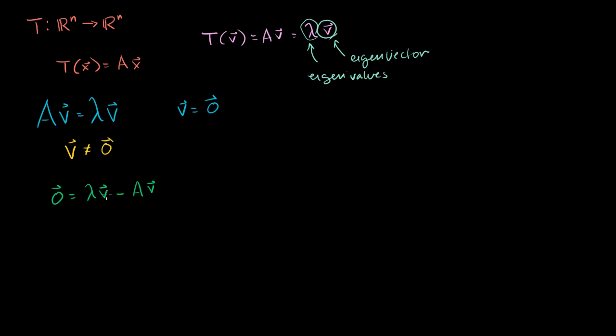Now, we can rewrite v as the identity matrix times v. v is a member of R^n. The identity matrix n by n, you multiply, we're just going to get v again. So if I rewrite v this way, at least on this part of the expression, let me swap sides. So then I'll get lambda times the n by n identity matrix times v minus A times v equals the 0 vector.